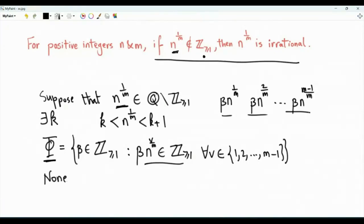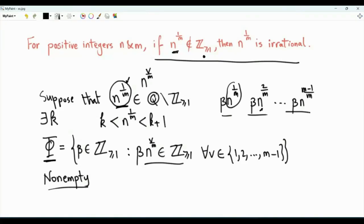This set is non-empty because of our assumption that n to the power 1 over m is a rational number. If n to the power 1 over m is rational, then squaring it gives n to the power 2 over m, and squaring a rational number yields another rational number, and so on. So n to the power v over m is rational for every integer v. Those numbers are all rational, and a beta that makes all those quantities integers is the least common multiple of the denominators of those numbers. Set phi is non-empty: the LCM of the denominators, or a multiple of the LCM, will make those quantities positive integers.